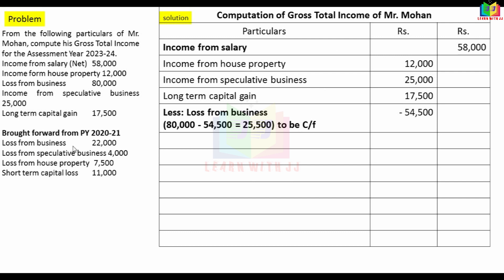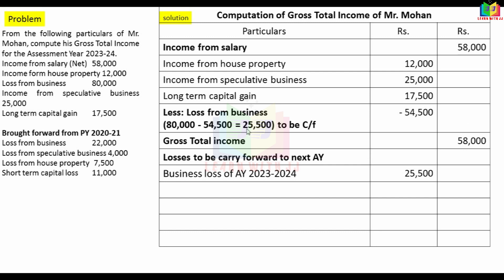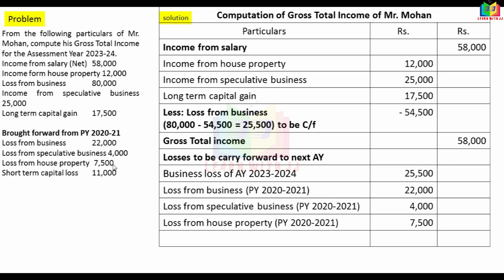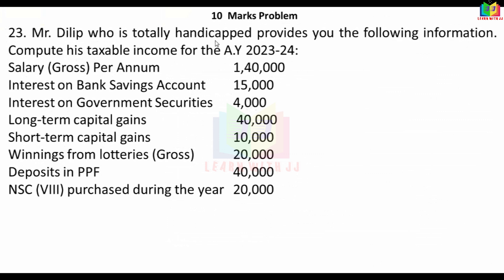The remaining loss from business of Rs.25,500 cannot be set off against any other income in the current year and must be carried forward. Current year loss from business was Rs.80,000, of which Rs.54,500 was set off, leaving Rs.25,500 to carry forward.